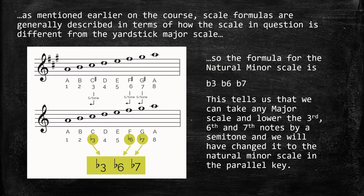Scale formulas are generally described in terms of how the scale in question differs from the yardstick major scale. So the formula for the natural minor scale is flat three, flat six, flat seven. This tells us that we can take any major scale and lower the third, sixth, and seventh notes by a semitone, and we will have changed it to the natural minor scale in the parallel key.